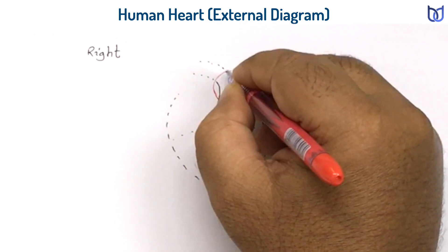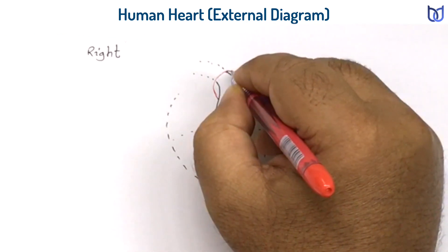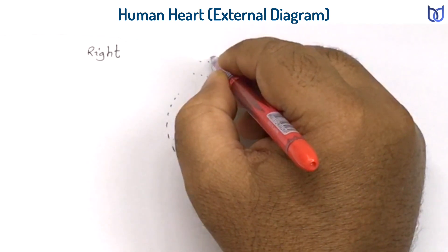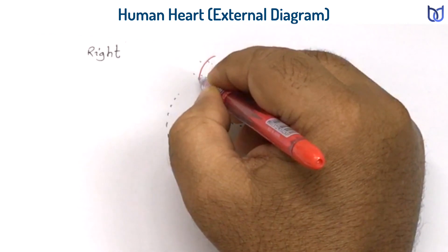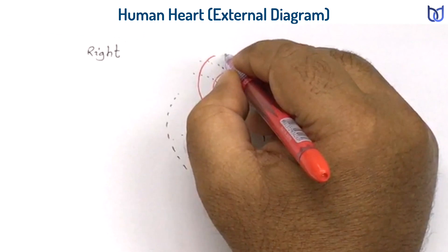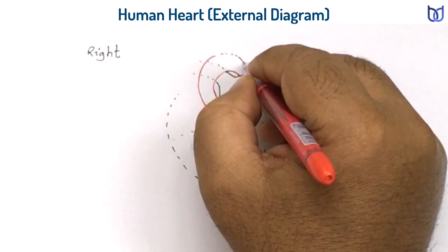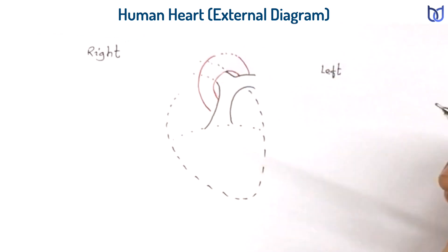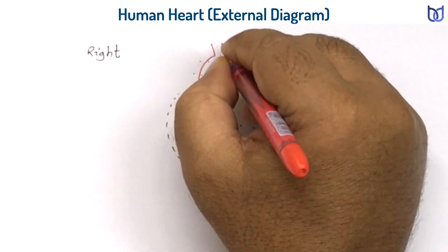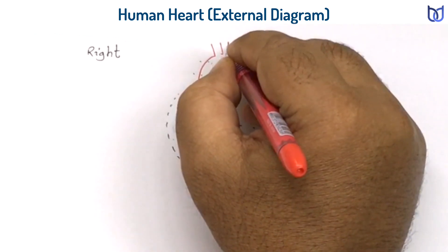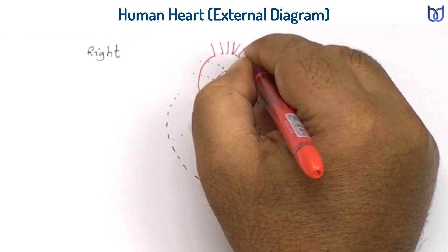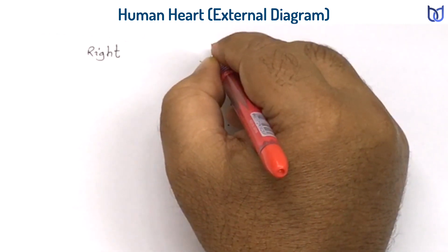You can use different colors for making the concept clear, but remember in an exam you must draw the diagram with pencils, as it is easy to make corrections. Different blood vessels arising from the systemic aorta can be shown here.